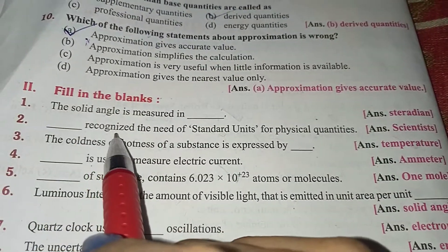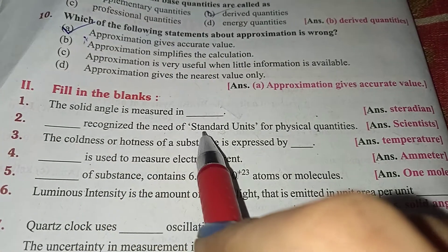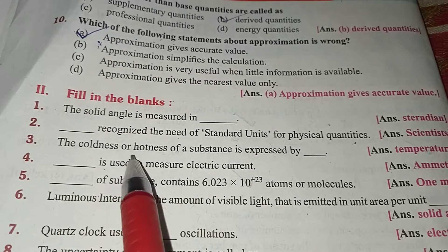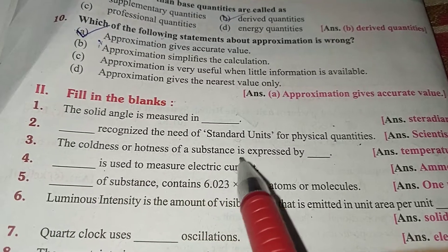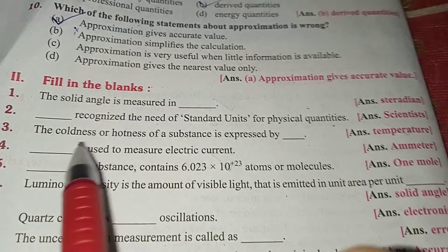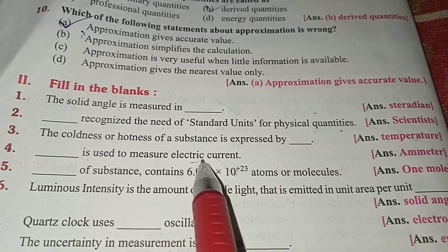Scientists recognized the need of standard units for physical quantities. The coldness or hotness of substance is expressed by temperature. Ammeter is used to measure electric current.